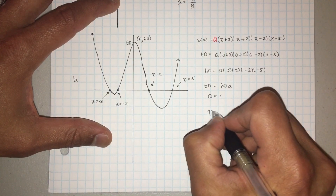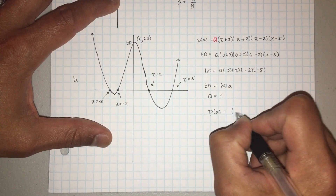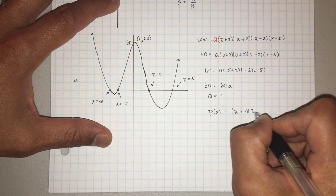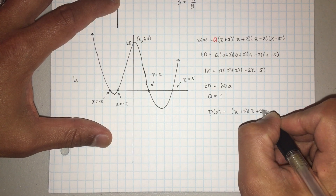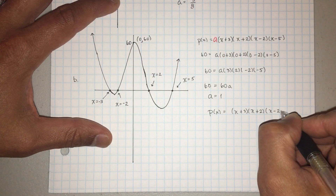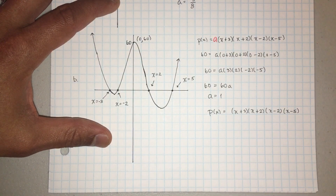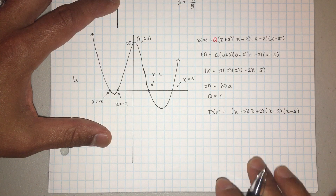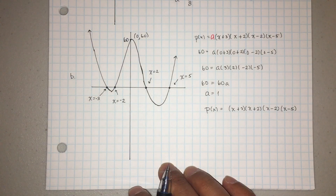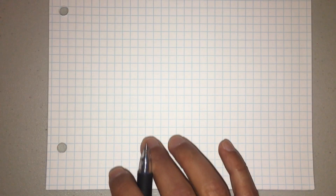So my polynomial written would be just (x plus 3)(x plus 2)(x minus 2)(x minus 5). If you want to go ahead and multiply it out by distributing, you can do that as well, but this should be perfectly acceptable for your teacher.